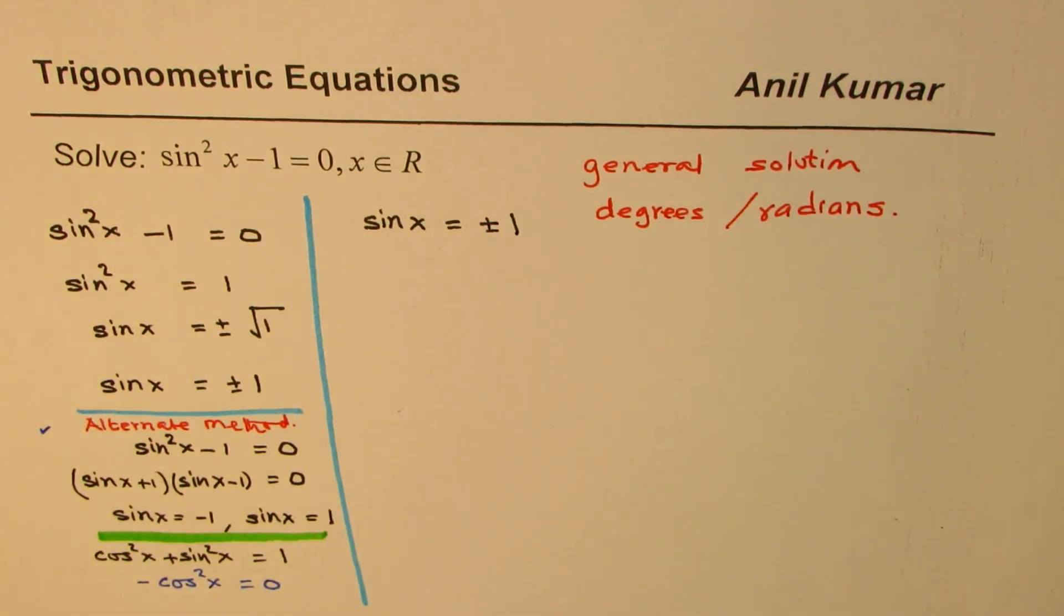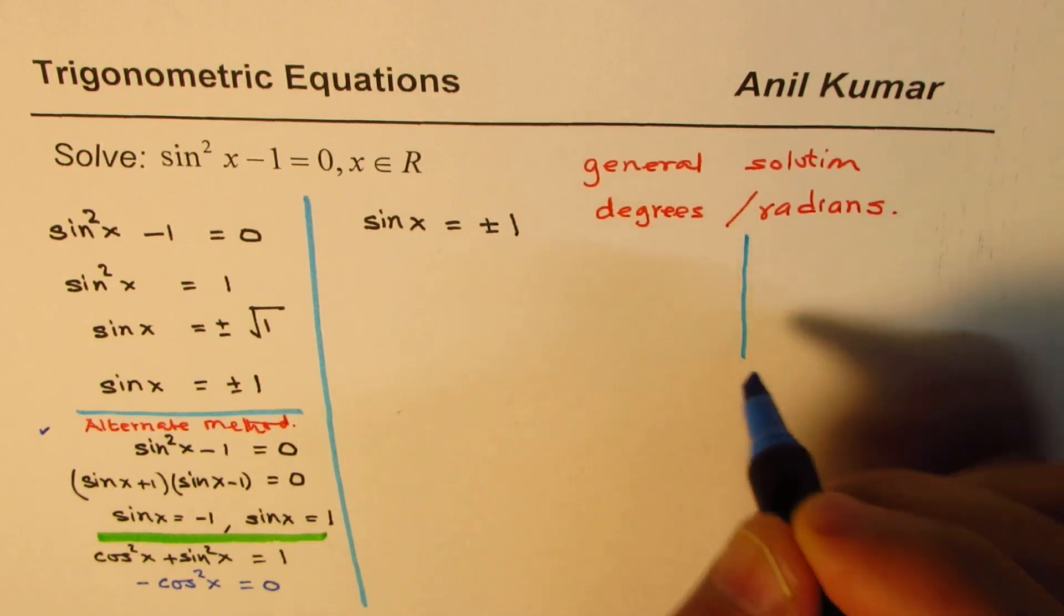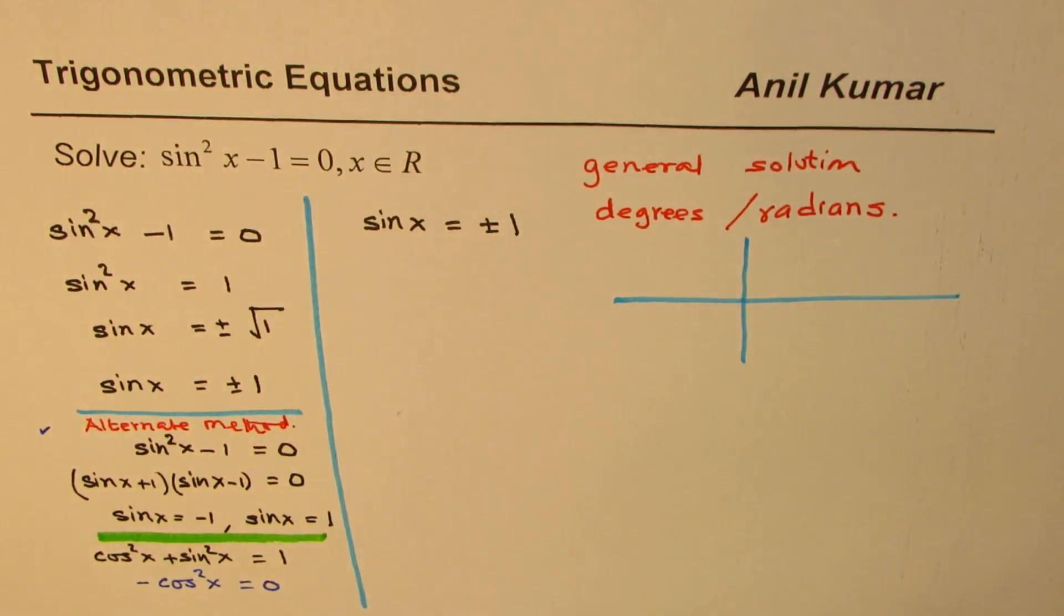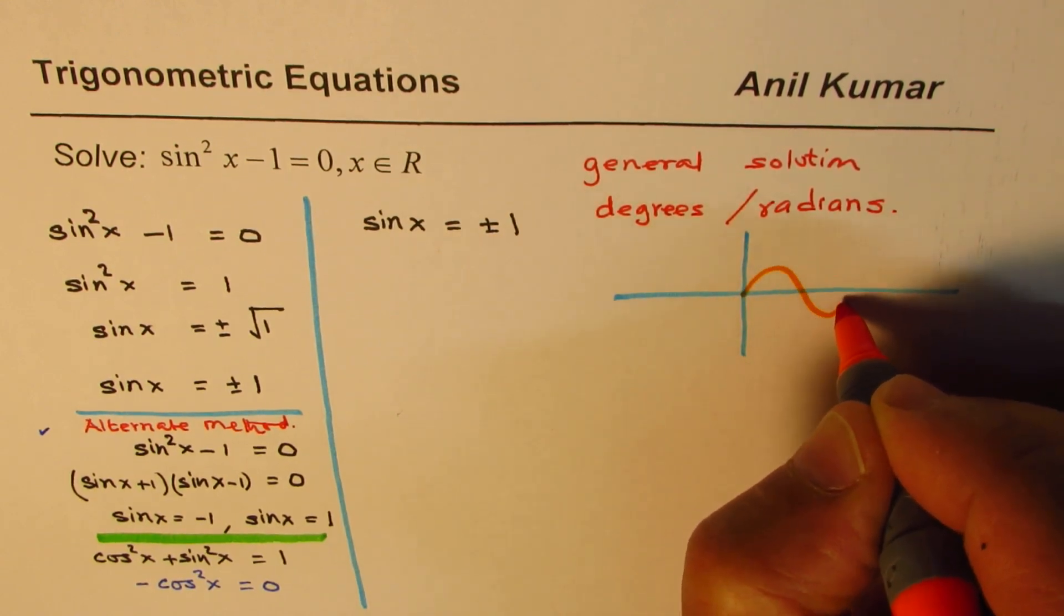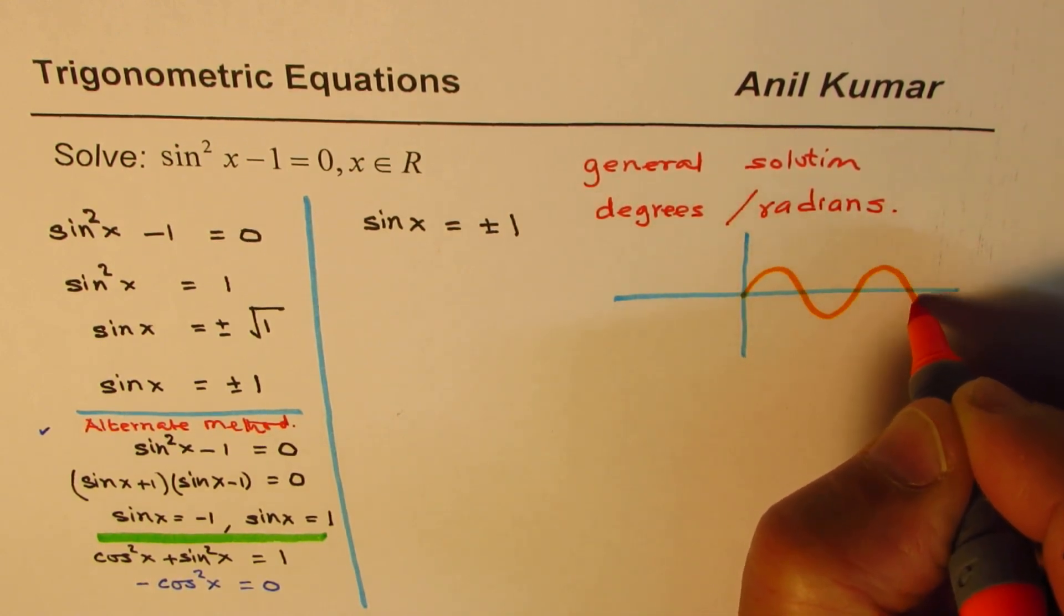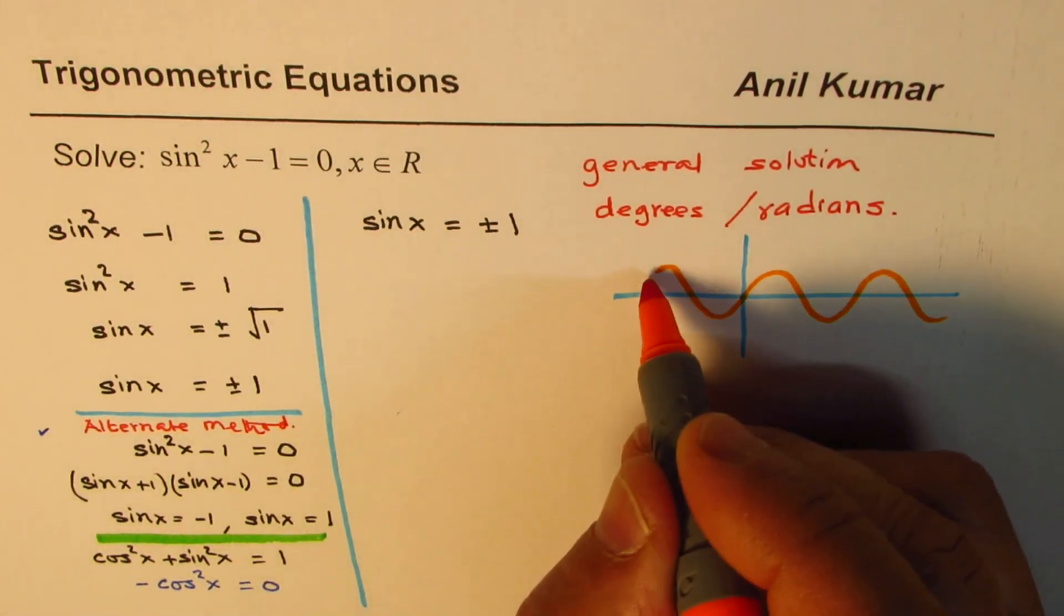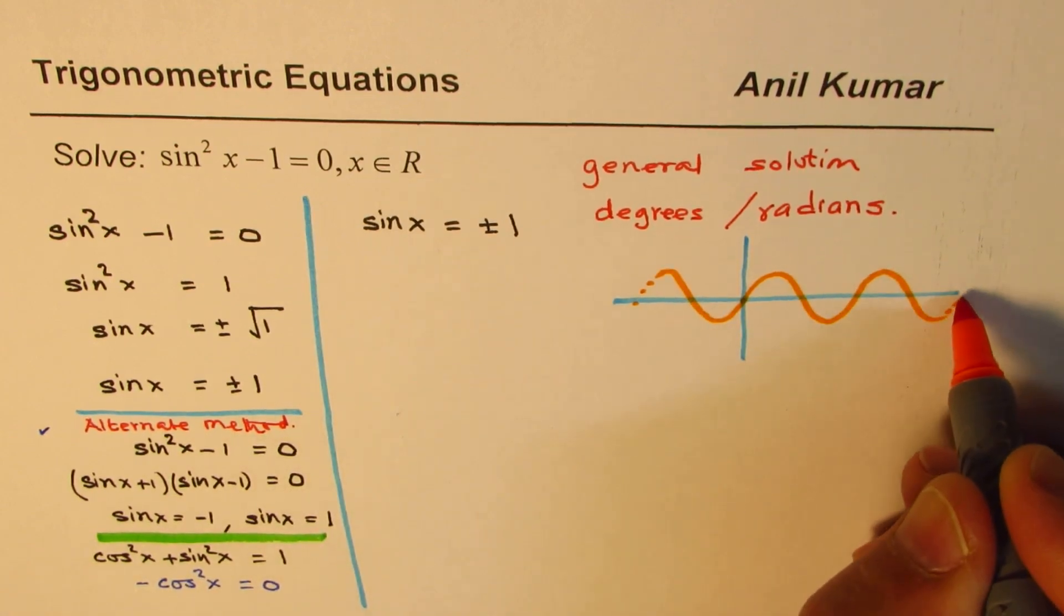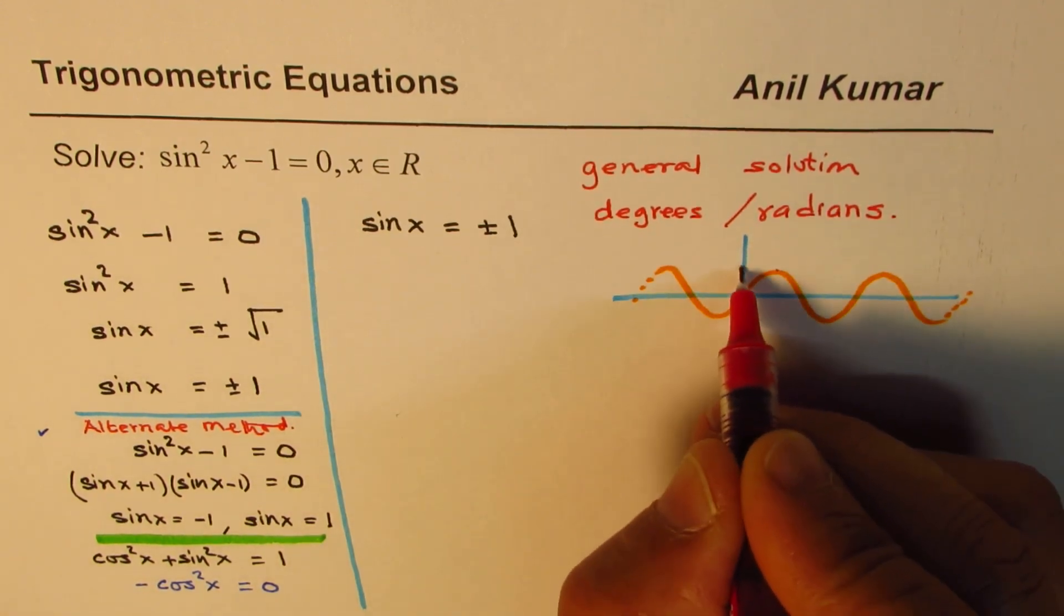Now, whenever the values are plus and minus 1, I prefer to sketch the graph of the function. That makes things simpler. For example, the sine x graph will be like this. Let me go this side also. Okay. That is the sine wave. Now, when we are saying that sine x is plus and minus 1, we are looking for these points.